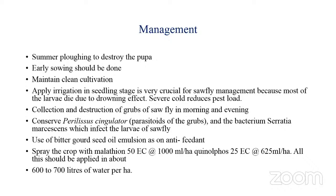For management, go for summer plowing to destroy pupae in the soil. Avoid early sowing to prevent a pest-conducive environment. Maintain clean cultivation and field sanitation. Apply irrigation at the seedling stage. Collect and destroy grubs. Conserve the parasitoid Perilissus singulator and the bacterium Serratia marcescens. Apply bitter gourd seed soil emulsion as this is an antifeedant to the pest. Spray malathion or phenthoate.